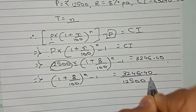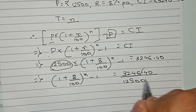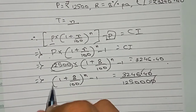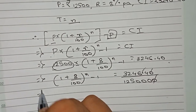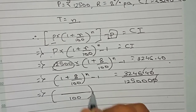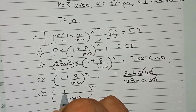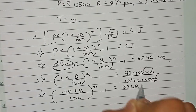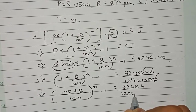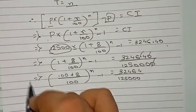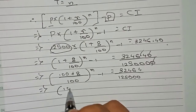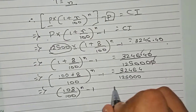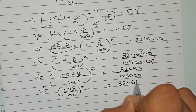To remove decimal points, since there are two decimal places, we add two zeros to both numerator and denominator. Solving the left side: (108/100)^n − 1 = 32464 / 1250000.